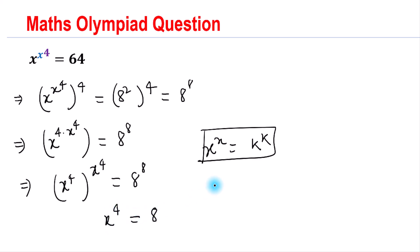By taking the 4th root on both sides, we can say that x equals plus or minus the 4th root of 8. So we get two real solutions of this given equation.